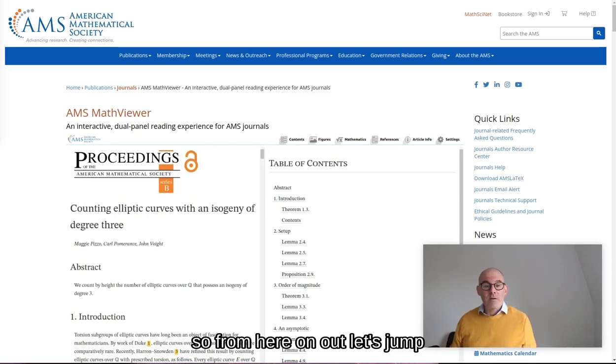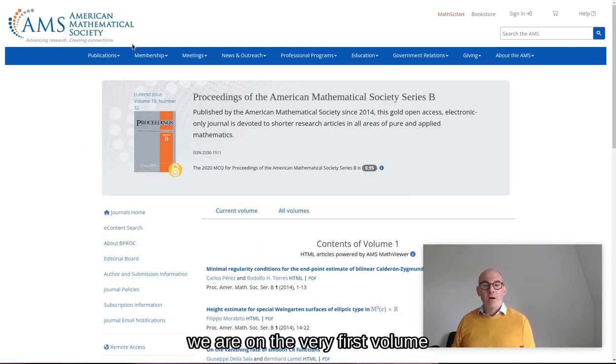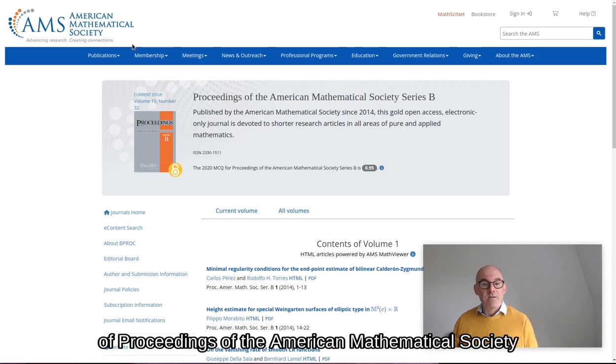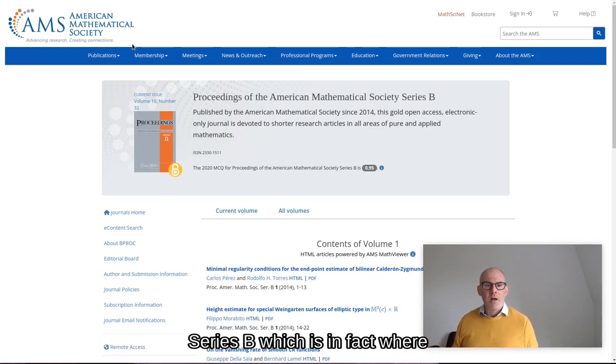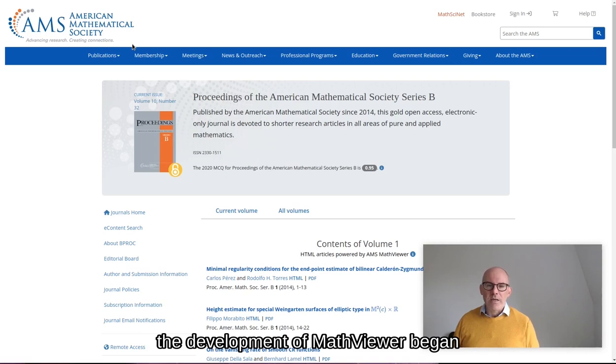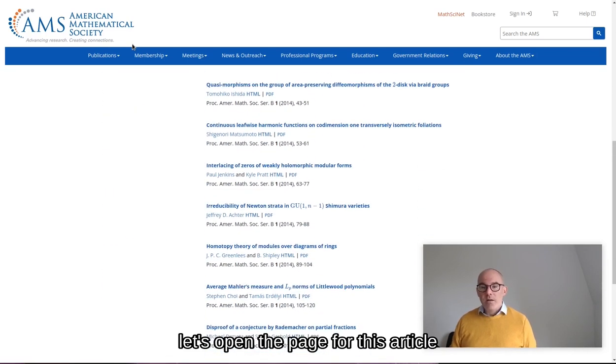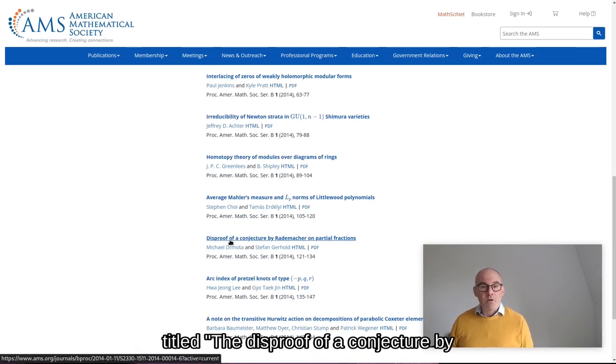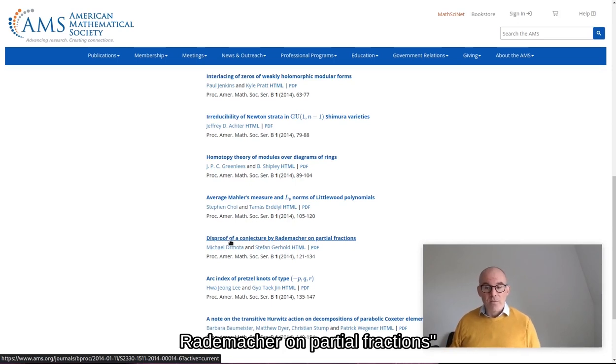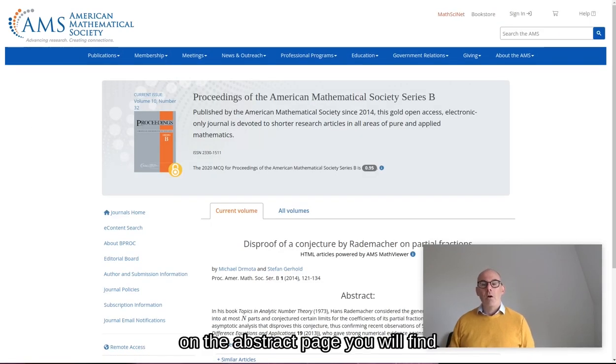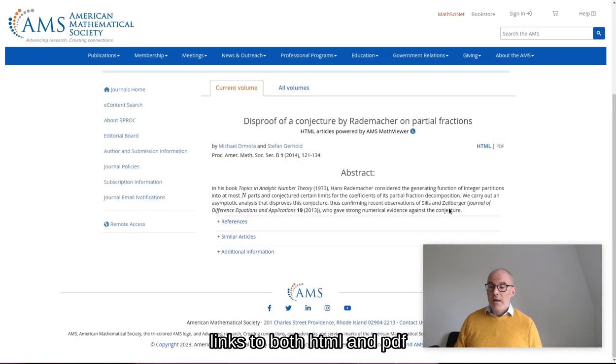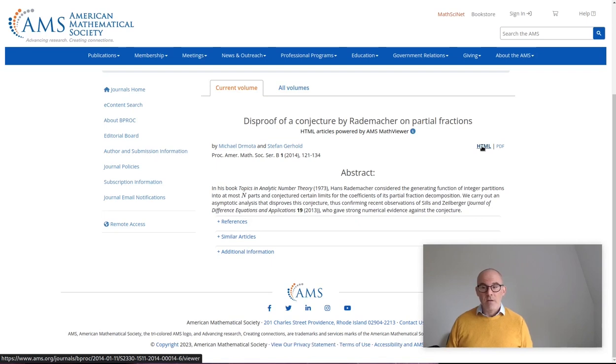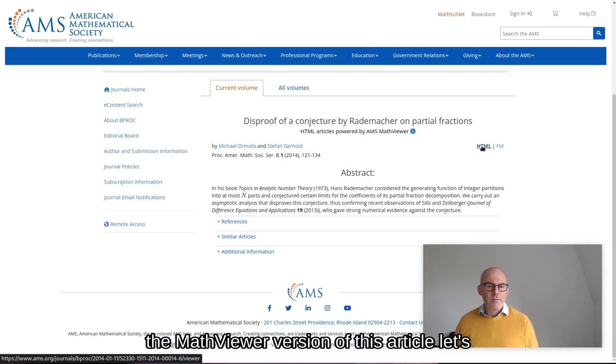So from here on out, let's jump over to a real use case. Let me switch to this tab. Here we are on the very first volume of Proceedings of the American Mathematical Society Series B, which is in fact where the development of MathViewer began. Let's open the page for this article titled The Disproof of a Conjecture by Rademacher on Partial Fractions. On the App Search page, you will find links to both HTML and PDF. The HTML link will lead us to the MathViewer version of this article. Let's follow the link.